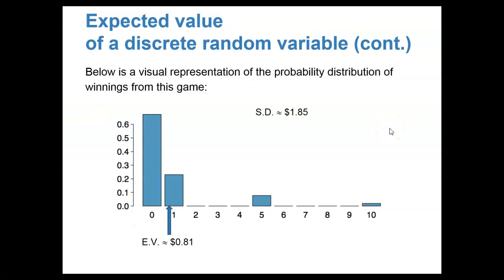So on the screen, you can see a visual representation of the probability distribution of winnings from the game that we have been discussing. Notice that the left hand axis, which is in measurements of decimals, would give us the probability value. So the height of each rectangle corresponds to the probability of the event that it corresponds to. The horizontal axis corresponds to the dollar winnings for each of the events that we've discussed in the game. And then below, I've plotted the expected value with an arrow pointing to where that would be on the horizontal axis. And the standard deviation is also labeled on the diagram.